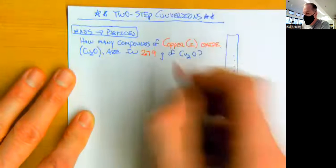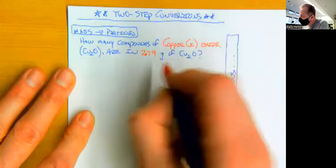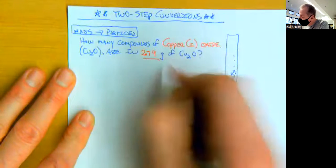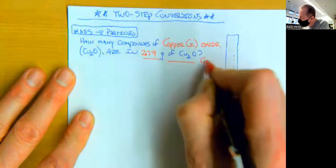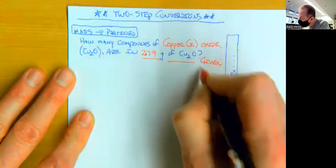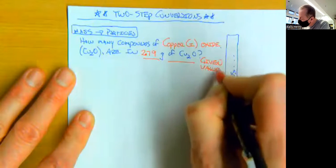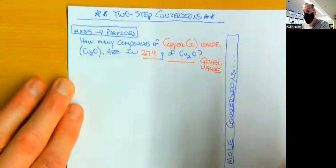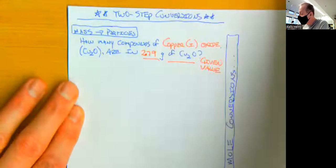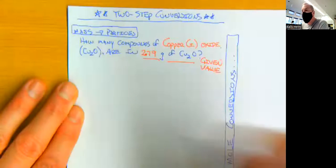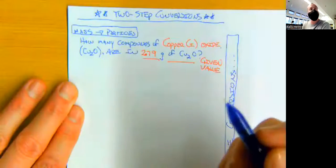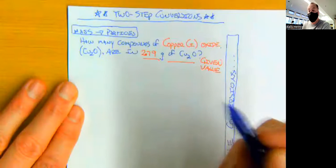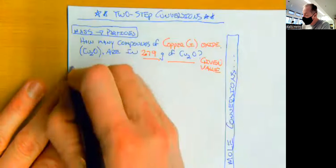So again, as we talked about the other day, here's our given value, right? This is our given value of 2.79 grams. Then we need to think about what is it that we know in this case? So what's known?